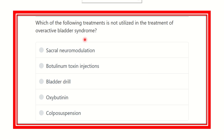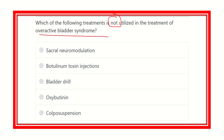Now see the question: which of the following substances is not utilized in the treatment of overactive bladder syndrome? The options are sacral neuromodulation, botulinum toxin injection, bladder drill, oxybutynin, and colposuspension.